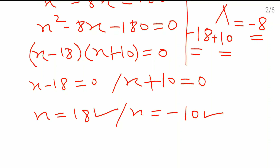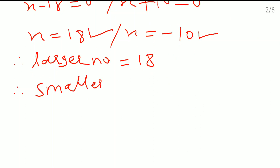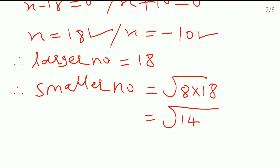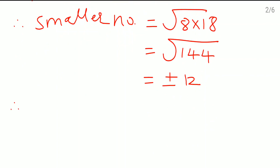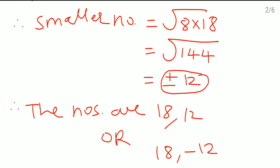So we take x equal to 18. Therefore, the larger number is 18. The smaller number equals the square root of 8 times 18, which is the square root of 144, and the square root of 144 is plus or minus 12. Therefore, the numbers are 18 and 12, or 18 and minus 12. I hope all of you understood this problem. Thank you.